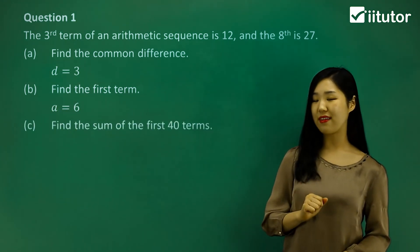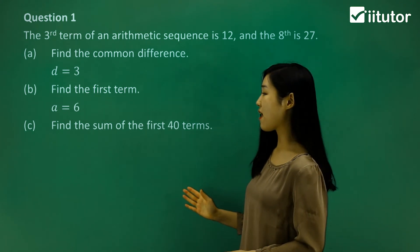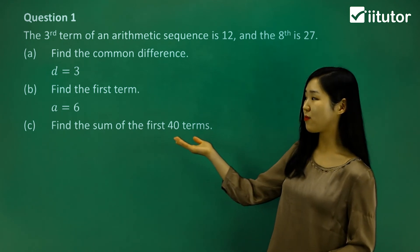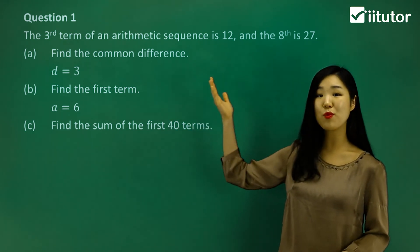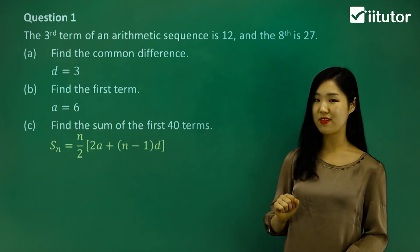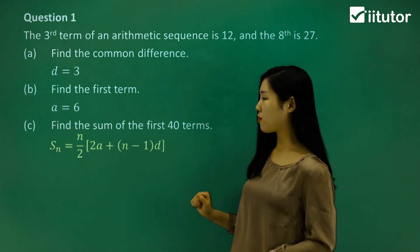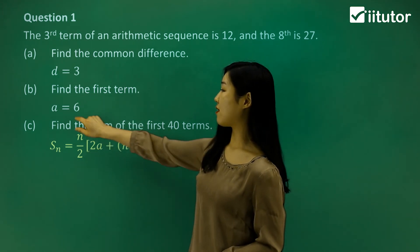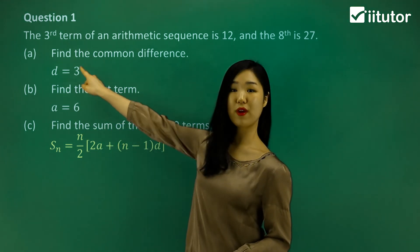Now we can answer part c. It's asking us to find the sum of the first 40 terms. We know what the first term is, we know what the common difference is, and we know what n is. It's going to be 40. We'll have to use our sum formula, this one here, the big one. n is 40, a is 6, and d will be 3. We'll put everything in. So we've got S40.